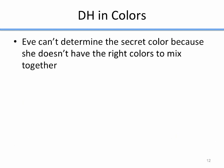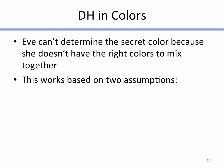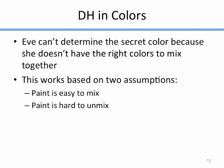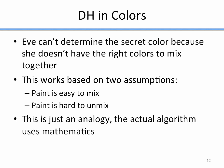Eve can't determine the secret color because she doesn't have the right colors to mix together — she only has the other mixed colors. This works based on two assumptions: we assume that paint is easy to mix, which is true, and we assume that paint is hard to unmix, which is also true. If I give you a bucket of paint and say I mixed this from two other colors, figure out what the two other colors were — there's not much you can do with that. So based on those two assumptions, Diffie-Hellman works for colors. This is just an analogy because the actual Diffie-Hellman algorithm uses mathematics.